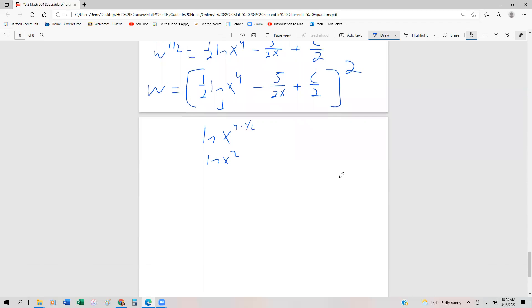And so another version of this might be [ln(x²) minus 5 over 2x plus c over 2] quantity squared.